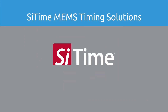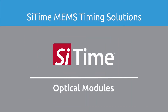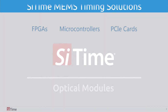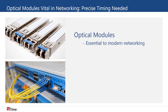SciTime MEMS Timing Solutions for Optical Modules. Optical modules are a vital component of modern networking that connect optical fiber to systems like servers and routers. In 2020, 100 gigabit per second data rate modules are the industry standard; however, 400 gigabit modules are seeing rapidly increasing deployment and 800 gigabit modules are in development.